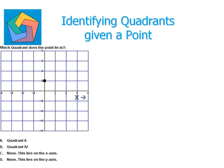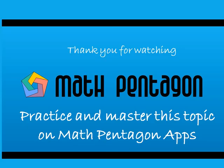Moving on to the next example: which quadrant does the point lie in? We have the horizontal x-axis and the vertical y-axis, and we see that this point lies at x equals 0 and y equals 1. Because x equals 0, this point lies on the y-axis and does not lie in any quadrant. Hope you enjoyed watching this video — you can practice and master this topic on our apps. Bye, have a great day!